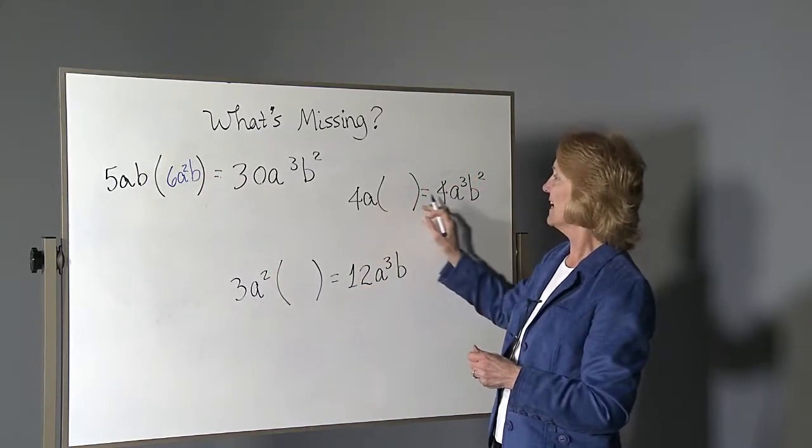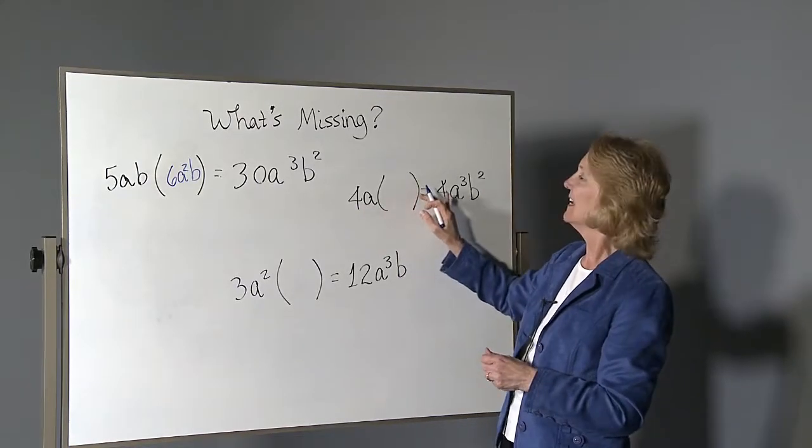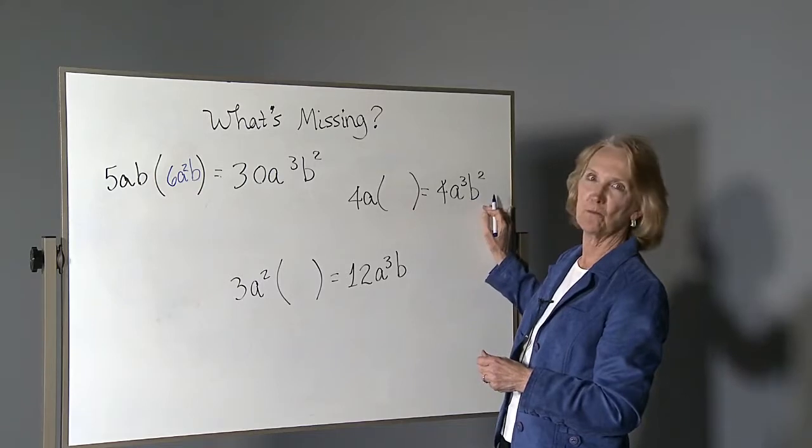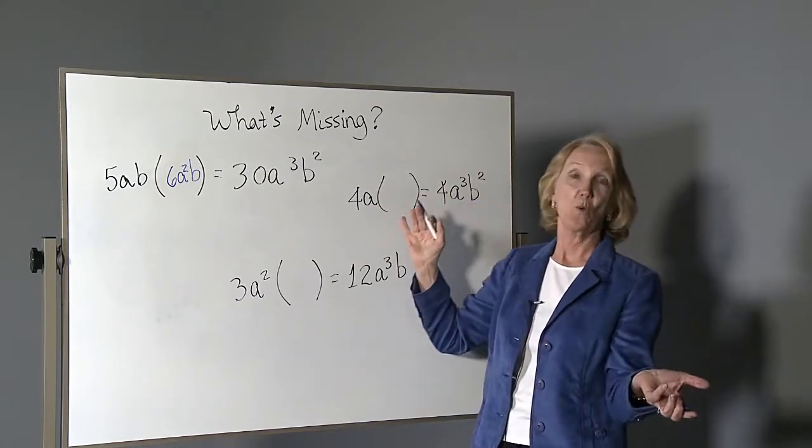Okay, our next one. We have 4a times something equals 4a to the third b to the second. Four times what equals four? One.